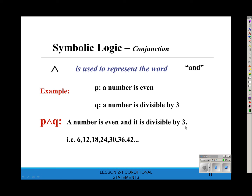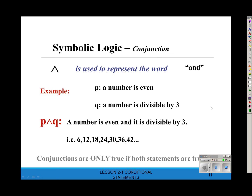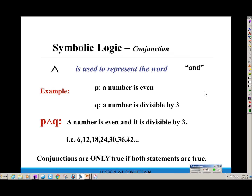For 'and,' both statements have to be true. So the only qualifying numbers are those that are both even and divisible by 3. 2 is even but not divisible by 3 — not included. 4 is even but not divisible by 3 — not included. 6 is even and divisible by 3 — that's why 6 is here. 12 works too, and so on. Conjunctions are only true if both statements are true.